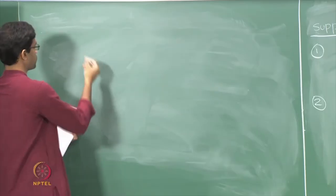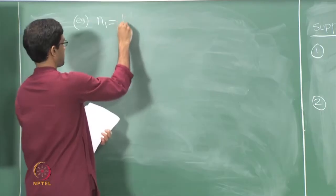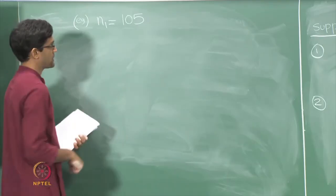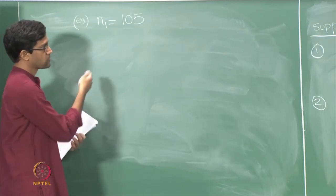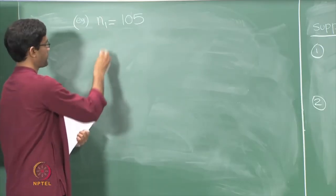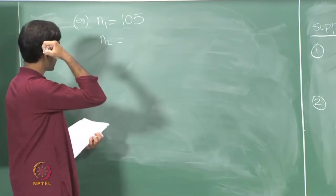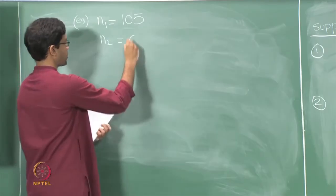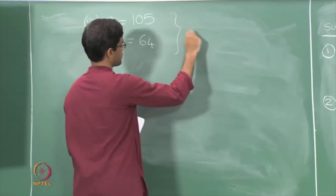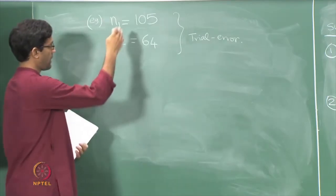Let us actually do it in this example. The value of n1 can be found by brute force — n1 equals 105. Looking back at the table from last time, n1 = 105 has the property that it is congruent to 1 mod 8 but 0 mod 21. Similarly, n2 should be congruent to 0 mod 8 but 1 mod 21 — that is 64. So n1 and n2 in this case are 105 and 64, found by trial and error.